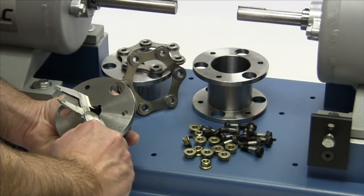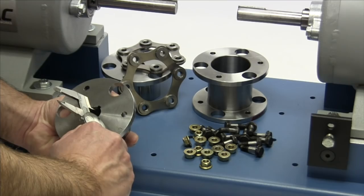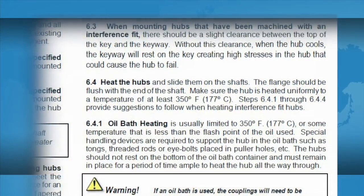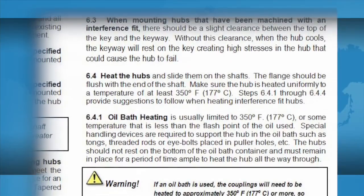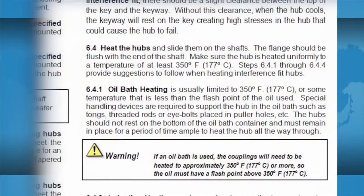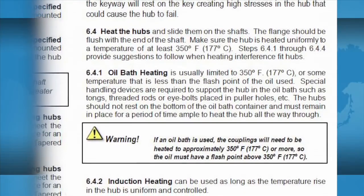You may notice the hubs are bored slightly smaller than the equipment shaft diameters. Unless otherwise specified, Lovejoy manufactures disc coupling hubs with an interference or shrink fit, and the hubs will need to be heated prior to placing them on the shafts.